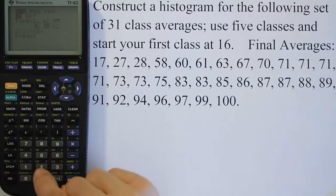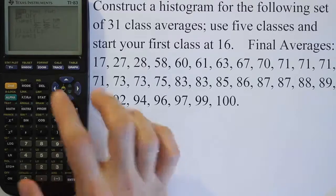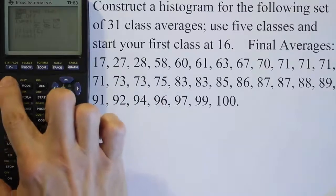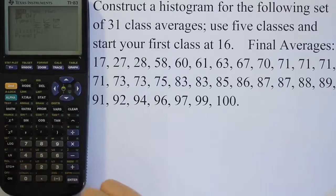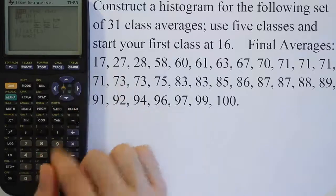But in this case, the data is actually in list one in our calculator. So I'll hit second, and then number one, it tells me list one. So the data is now in list one, and that's where the calculator is going to look for these numbers to use in the graph.